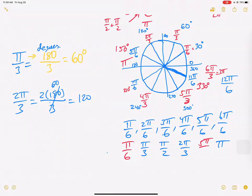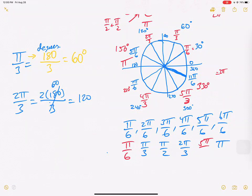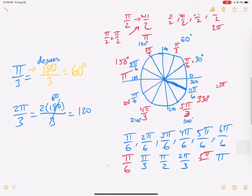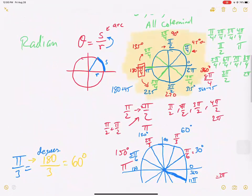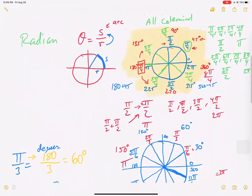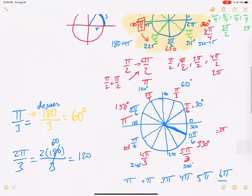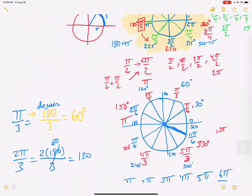So we have the 30-60-90 set and the 45-45-90 set — these are our two sets of unit circles you need to memorize. I'll highlight what you've got to know.